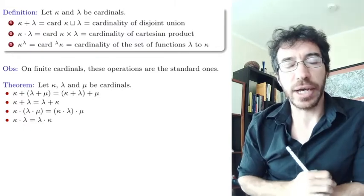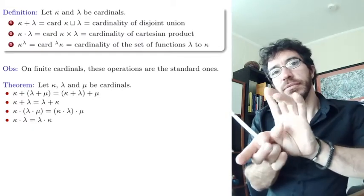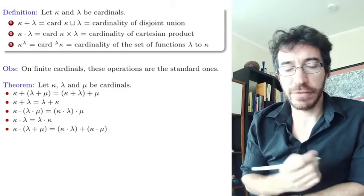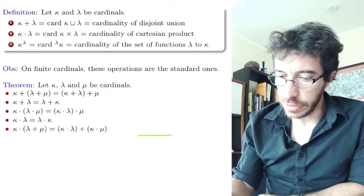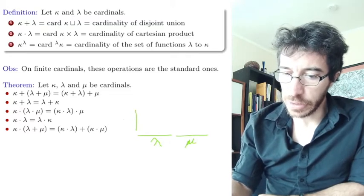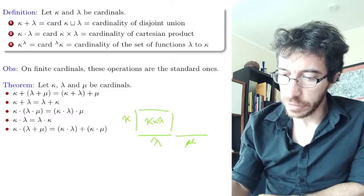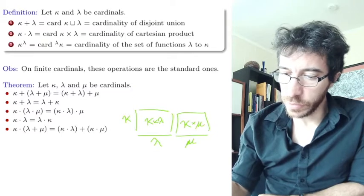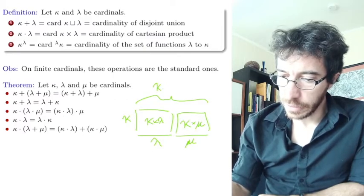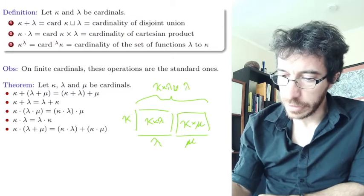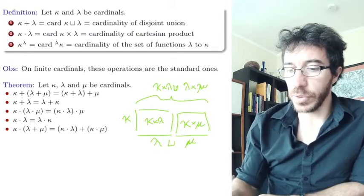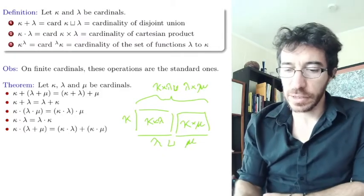Commutativity of multiplication also holds — essentially you take the Cartesian product and flip it. Distributivity is also quite easy: lambda ⊔ mu times kappa splits into kappa × lambda ⊔ kappa × mu, and that's the same as (lambda ⊔ mu) × kappa, so you can see it one way or another and these two are the same size.